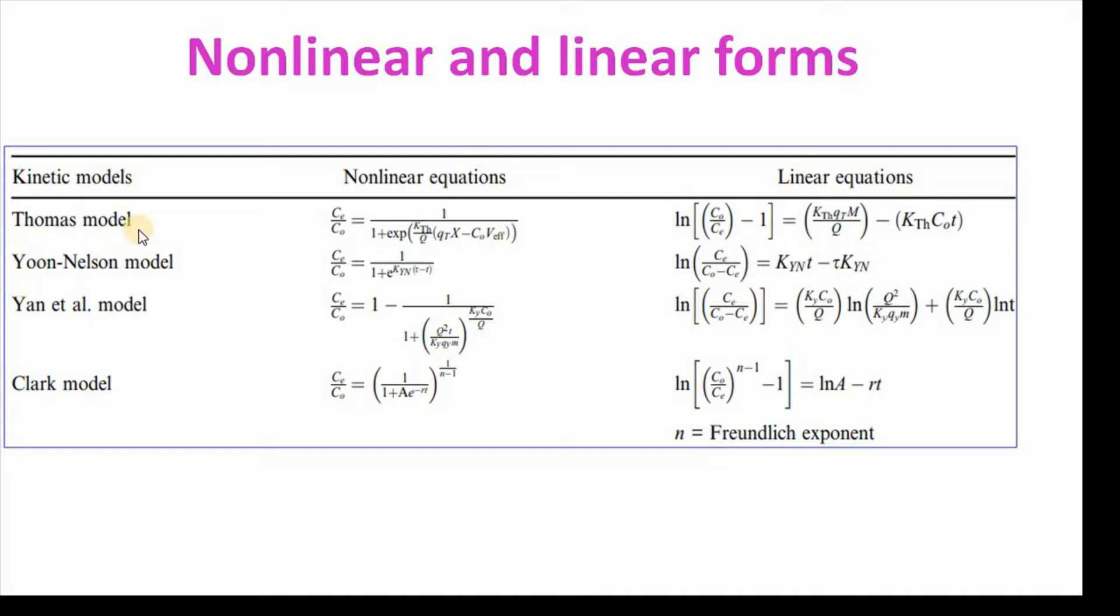Well, these are the list of kinetic models with nonlinear and linear form. The first one is Thomas model, where CT by C0 equals 1 divided by this. This is nonlinear form and this is linear form.